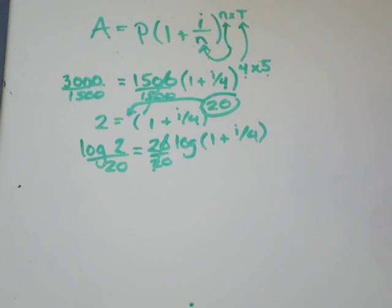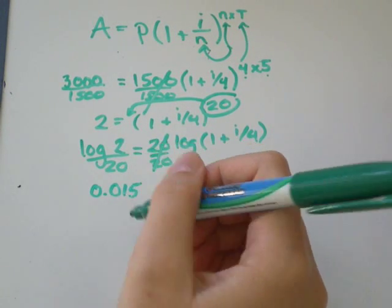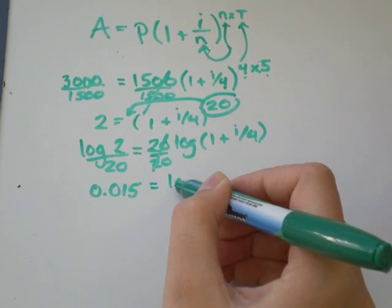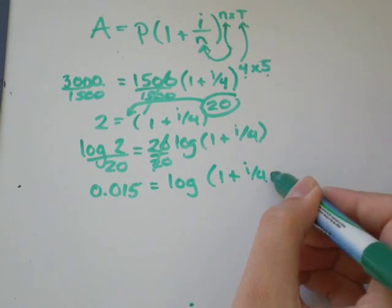So I'm just going to type in my calculator, log 2 divided by 20, and I get 0.015. And it's got a couple more decimals, but we'll just round it to 0.015. And that is equal to the log of 1 plus i over 4.